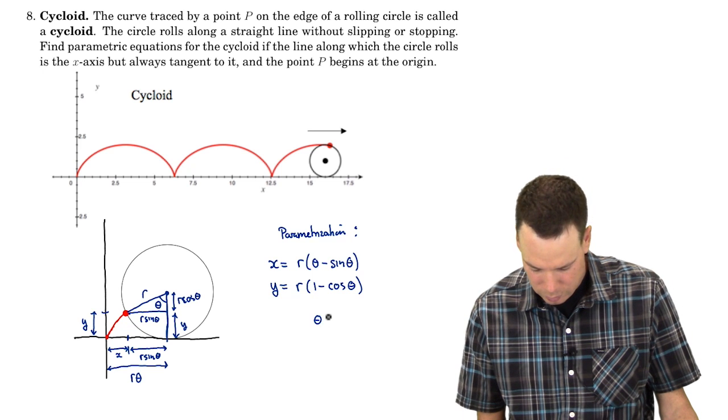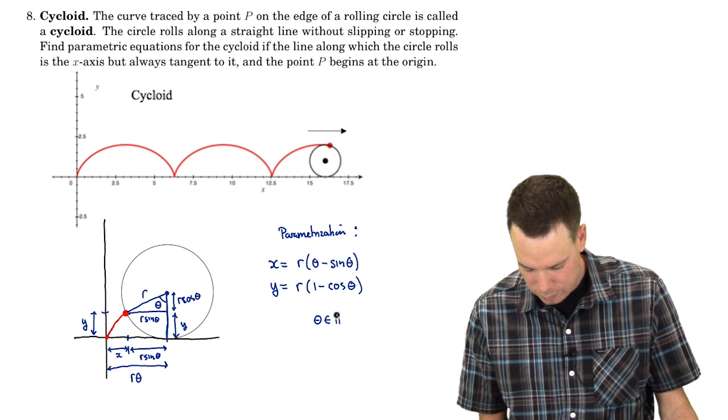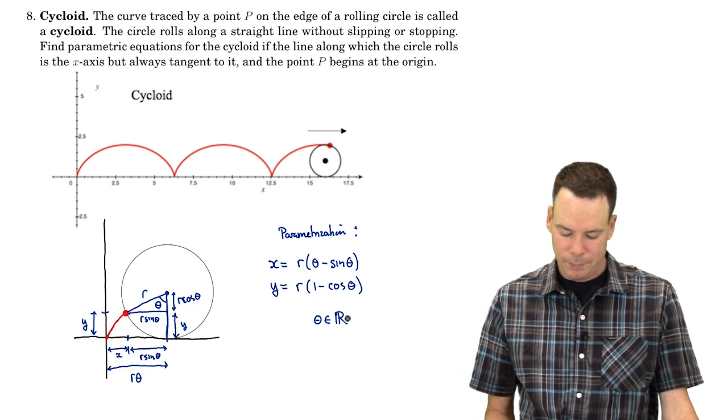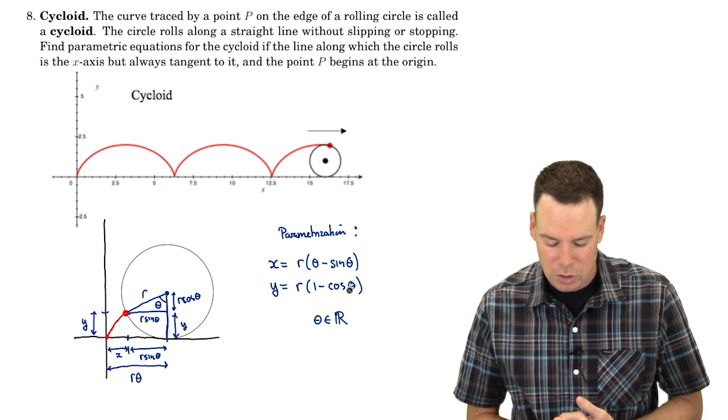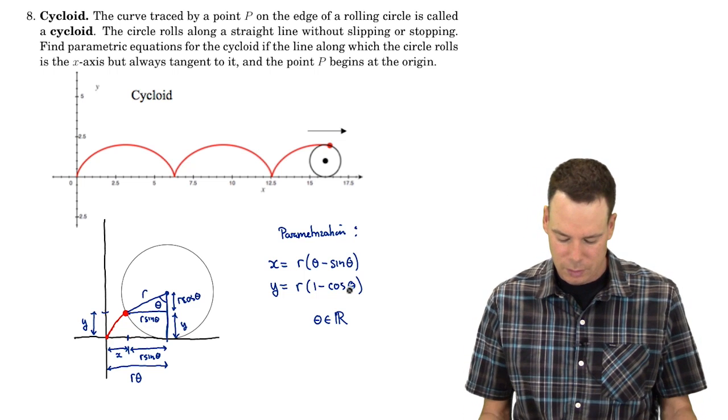What is theta allowed to range over? Well, we can run over any real number. And there's our parametrization for our cycloid.